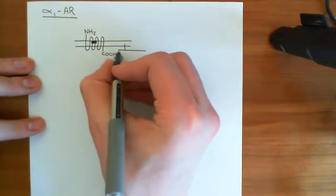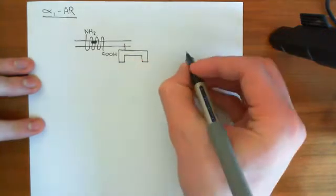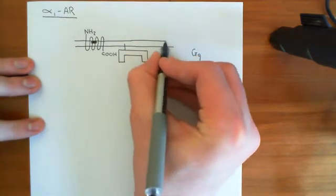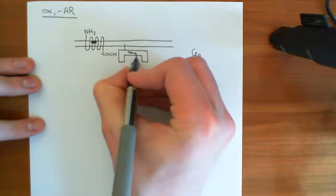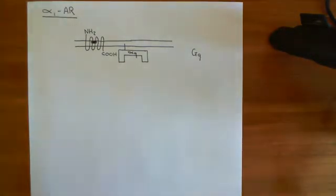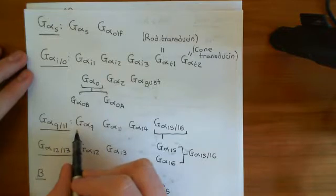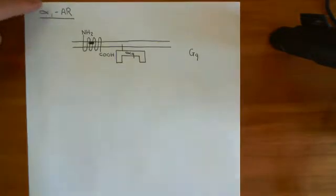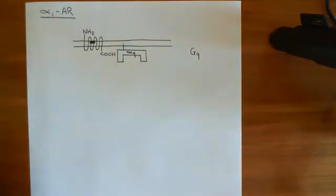Which heterotrimeric G-protein do the alpha-1 adrenoreceptors interact with? They interact with a GQ heterotrimeric G-protein. Remember, the way you name heterotrimeric G-proteins is by which alpha-subunit they have. So this tells us that the alpha-subunit is specifically the G-alpha-Q. One of the members of the G-alpha-Q-11 family is the G-alpha-Q gene, and we are going to interact with a heterotrimeric G-protein which has G-alpha-Q as its alpha-subunit.